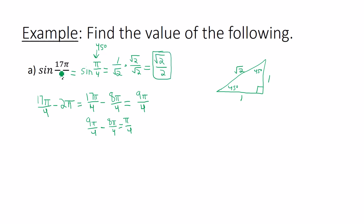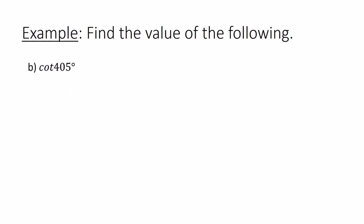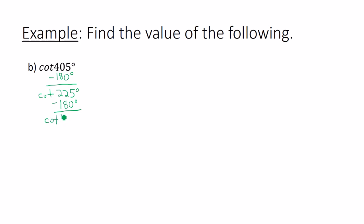All I did was take away increments of 2π until I got to a final angle measure between 0 and 2π, or 0 and 360 degrees. Another example: cotangent of 405 degrees. Cotangent repeats itself every 180 degrees, so I take away 180 degrees from 405 to get 225 degrees. Then I take away 180 degrees again, giving us cotangent of 45 degrees.